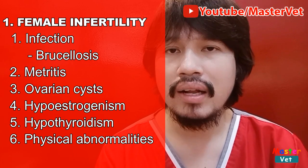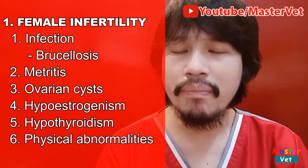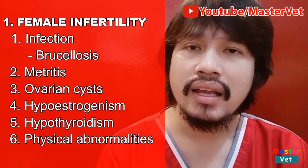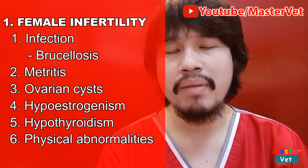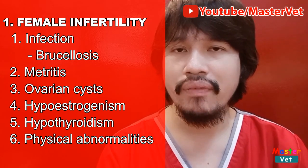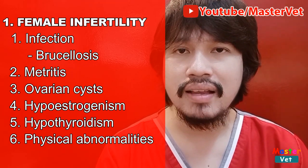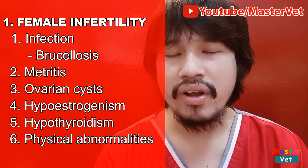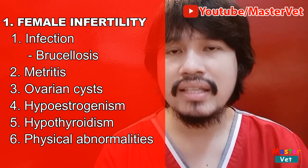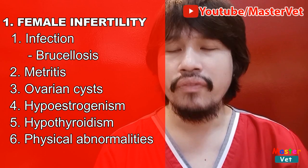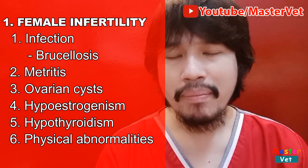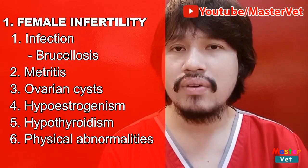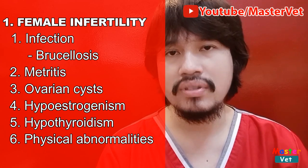Una, yung tinatawag na female infertility o yung pagkabaog ng babaeng aso. Ano yung mga dahilan kung bakit nababaog yung babaeng aso? May mga ilan-ilan tayo: caused by infection, metritis, ovarian cysts, hypoestrogenism, hypothyroidism, and physical abnormalities. Kapag may infection, kapag yung aso ay may sexually transmitted disease caused by brucellosis, isang uri ng bacteria. And this is the main cause of female infertility sa mga aso sa ibang bansa.